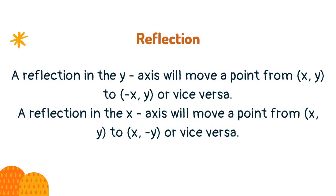A reflection in the y-axis will move a point from (x, y) to (−x, y), or vice versa. A reflection in the x-axis will move a point from (x, y) to (x, −y), or vice versa.